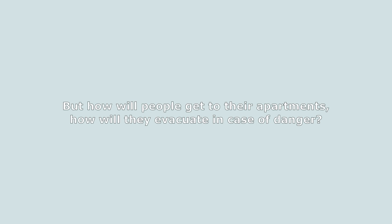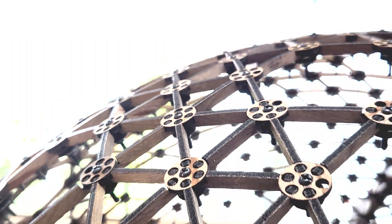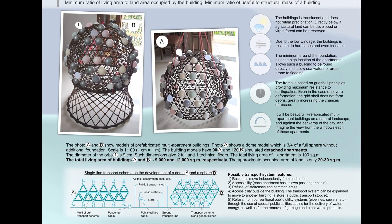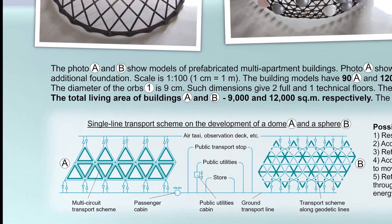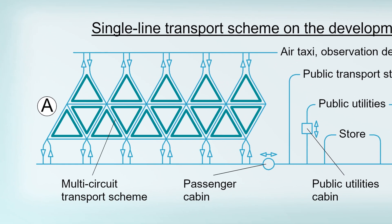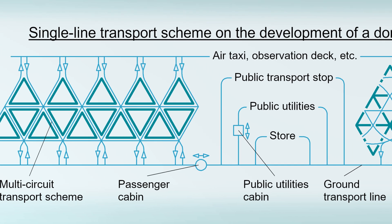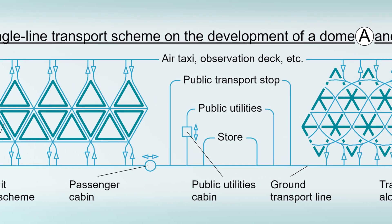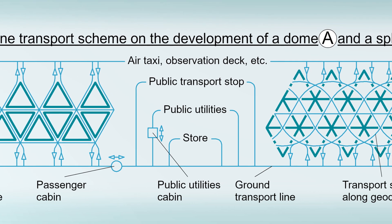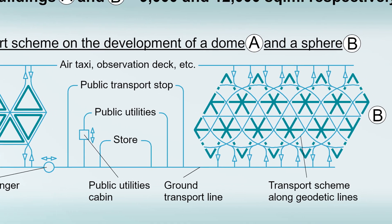But how will people get to their apartments? How will they evacuate in case of danger? Let us imagine that this is the surface of a small planet, which means we can build a transport network of paths on it. Paths can be laid on the outer or inner surface of the grid shell, and even built into the shell itself. All that remains is to launch automatic cabins with independent drive along these paths and, ideally, equip each apartment with them.